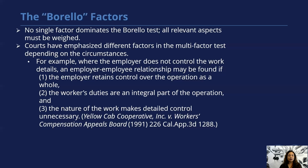For example, where the employer does not control the work details — so this is where control didn't really matter, but there was still an employer-employee relationship — in those circumstances, the employer retained control over the operation as a whole, the workers' duties were an integral part of the operation, and the nature of the work makes detailed control unnecessary.